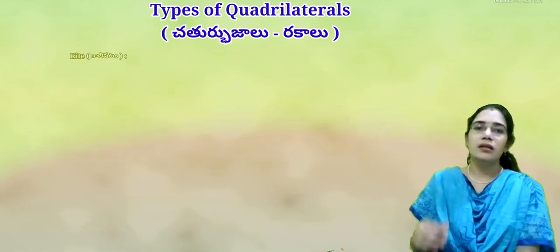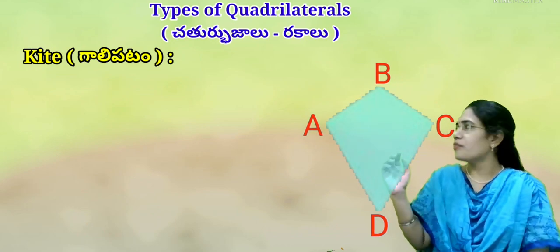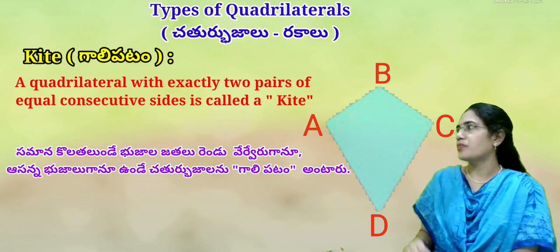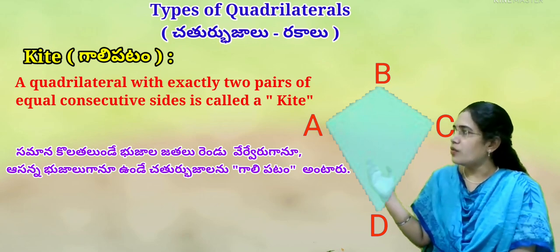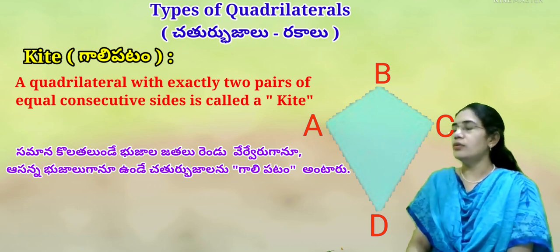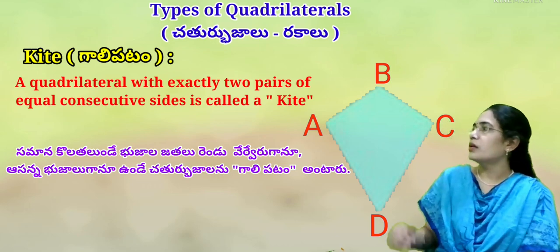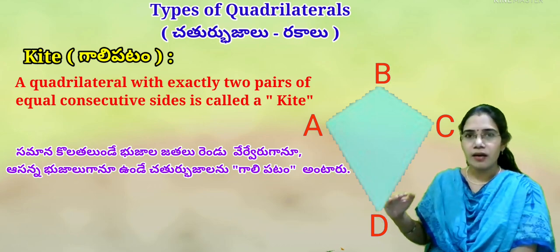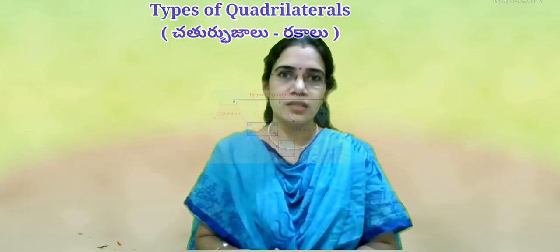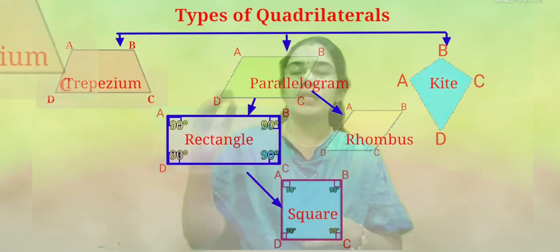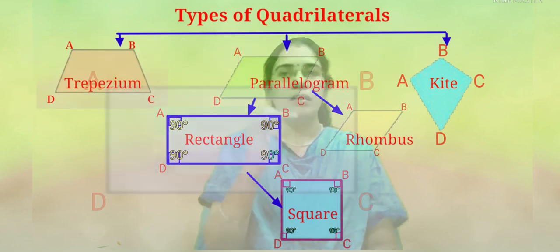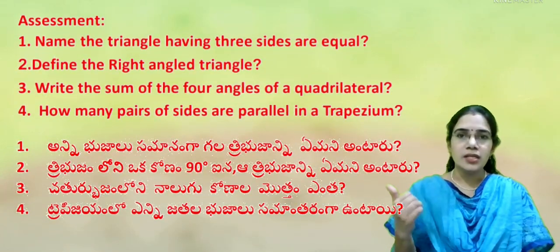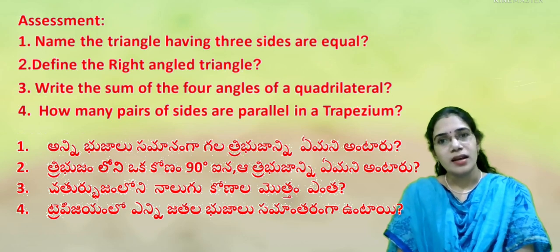Coming to the next type — kite. A quadrilateral with exactly two pairs of equal consecutive sides is called a kite. So the types of quadrilaterals are: trapezium, parallelogram, rectangle, square, rhombus, and kite. Now try to answer the questions. Let us meet in the next video with another topic. Stay tuned.